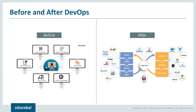DevOps methodology is basically an infinite loop, meaning everything is continuous. The moment any developer commits code to the shared repository, it is pulled by a continuous integration server, a build is prepared, it is tested, and finally deployed onto the production server for release, and continuously monitored by continuous monitoring tools.